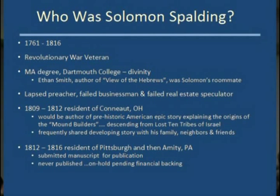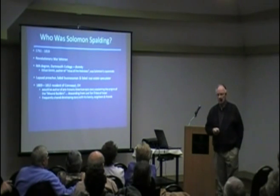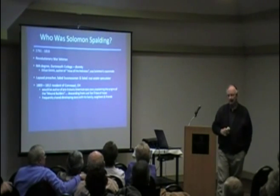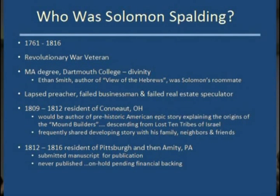Solomon was a lapsed preacher, a failed businessman, and a failed real estate speculator. He moved to Conneaut, Ohio in 1809 and lived there for a couple of years until around 1812. He had some real estate investments there in the Western Reserve and started a business — a forge — but he was injured, so he turned to writing. He had always enjoyed writing on a personal level and later tried to turn that into a business interest.